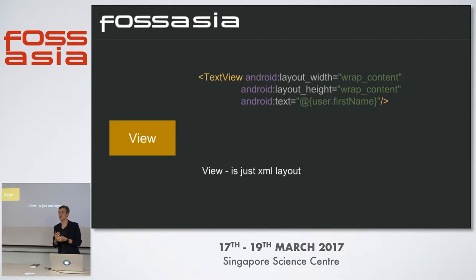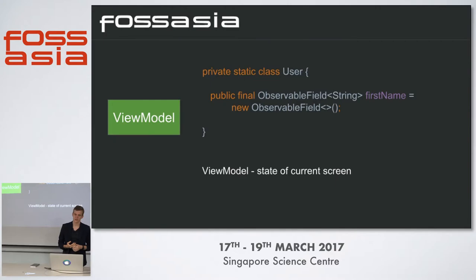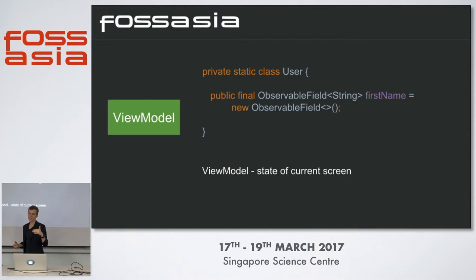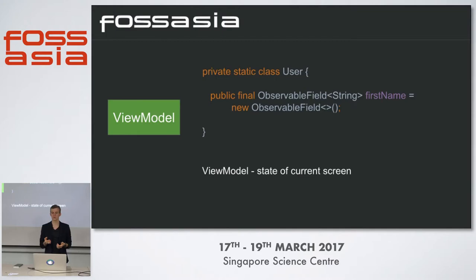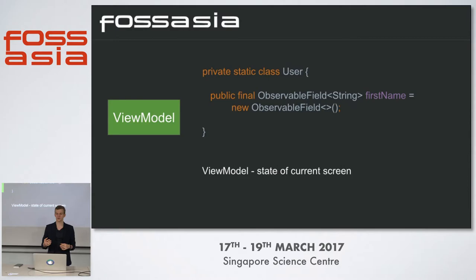That's the main cornerstone of MVVM architecture. The ViewModel class is the M in MVVM — it stores the current state of the screen. Everything shown on the screen is stored in fields of this model. It's called ViewModel because it's the bridge between View and Model. We have an ObservableField<String> — an Observable field from Data Binding that provides automatic update logic. If we call firstName.set() with some text, this text will be updated in our View automatically.